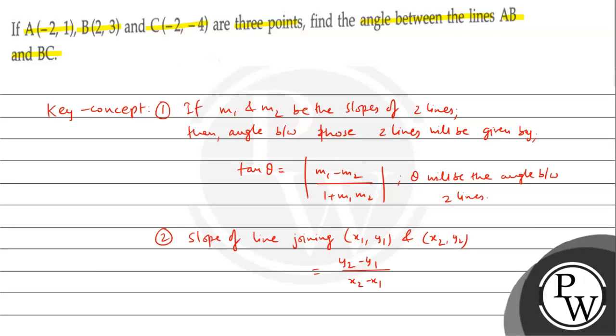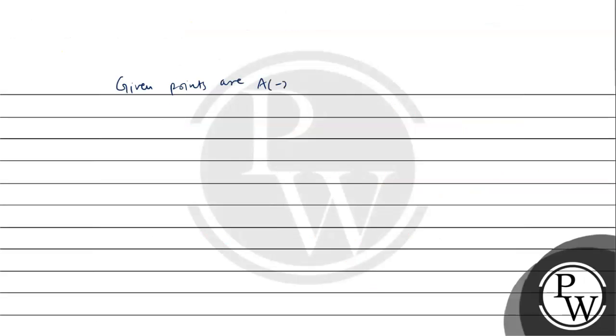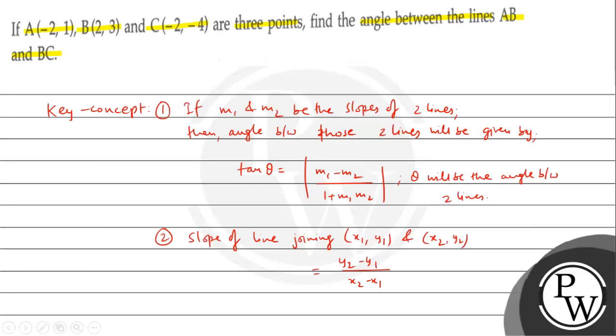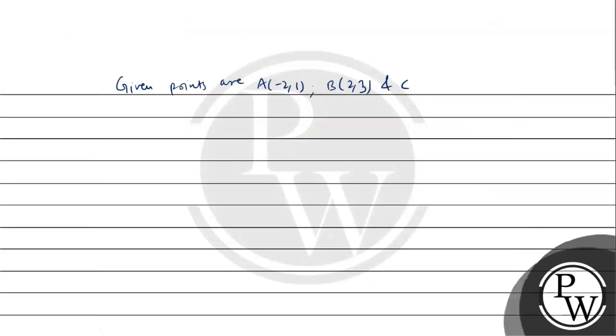Which points are given? Given points are A is (-2, 1), B is (2, 3), and C coordinates given are (-2, 4).